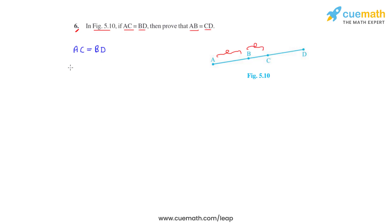We write AC as AB plus BC, which equals BD, and BD can also be written as the sum of BC and CD. So let's write that: BD equals BC plus CD.